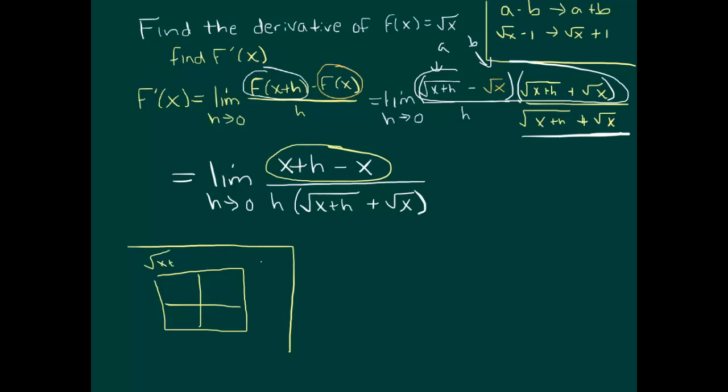Make yourself maybe a 2 by 2 box or something where you do square root of x plus h minus square root of x and then square root of x plus h plus square root of x. Multiply each box, add them all up, and I guarantee you'll get precisely what I've written there.